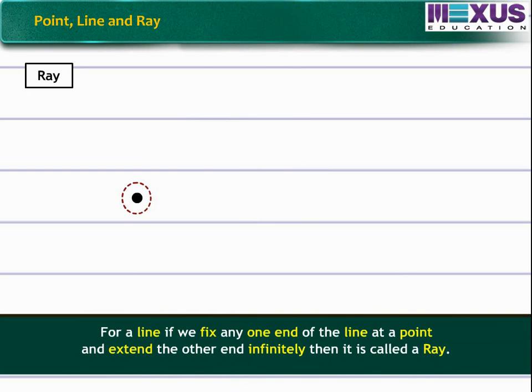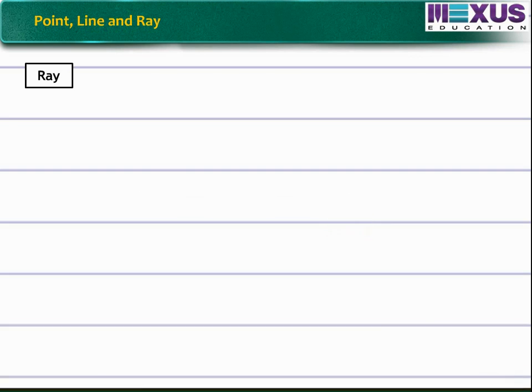Now, for a line, if we fix any one end of the line at a point and extend the other end infinitely, then it is called a ray.